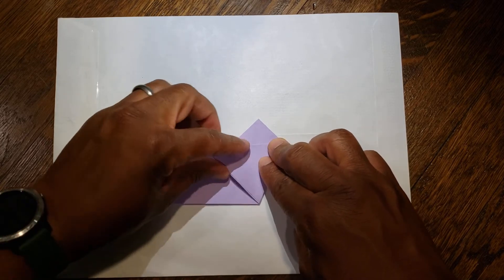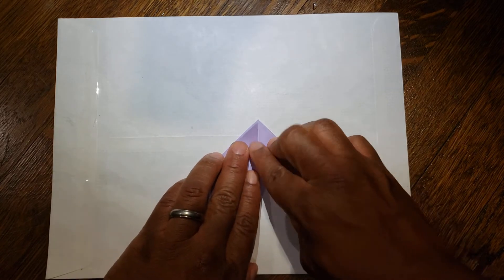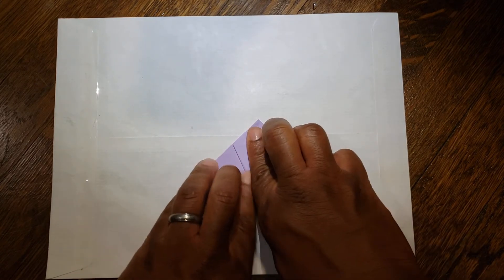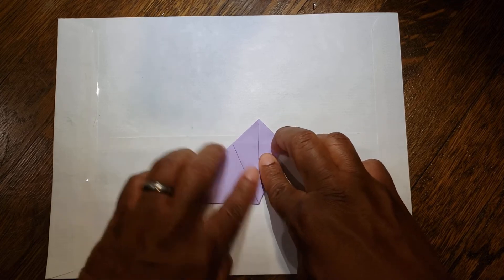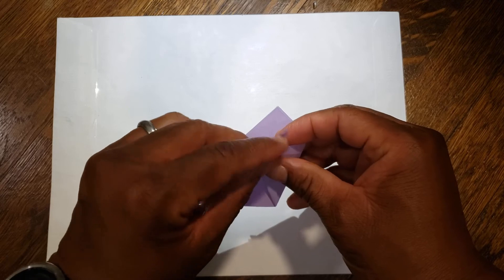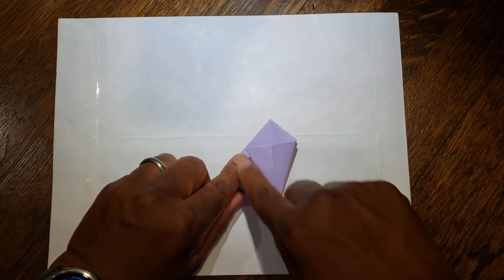Then take this point and fold it up to the top, and fold and pick your paper up and fold this behind. So again, we have our kite shape here.